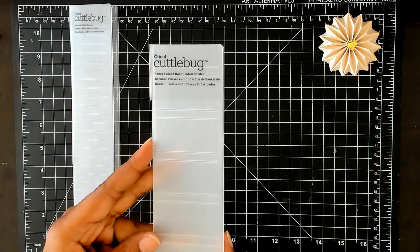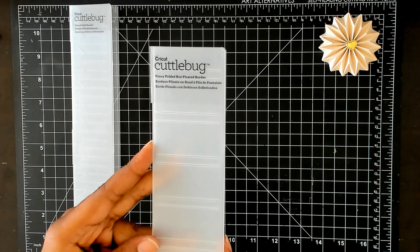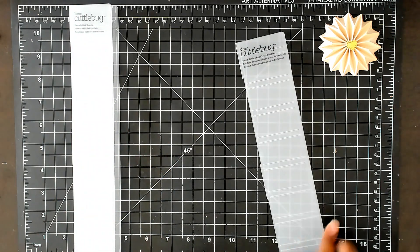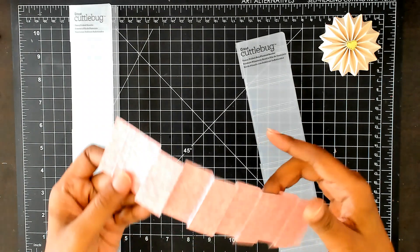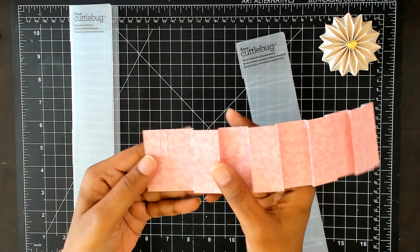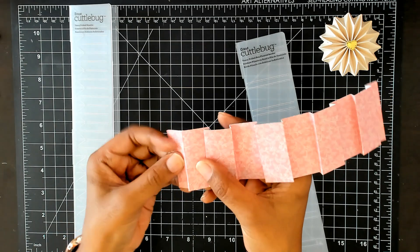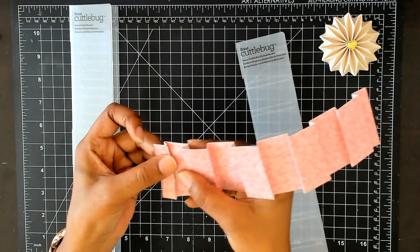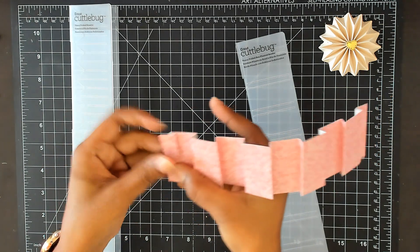This one is called Fancy Folded Box Pleated Border and this one is really easy too. I left this one undone but this is what it looks like. You would just pull that up and then that would create another pleat for you there. Super easy to do, fun, love it.